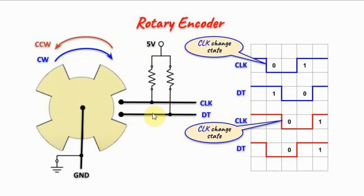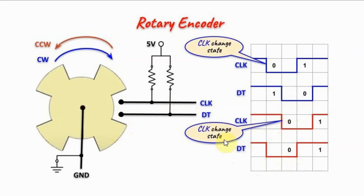When we turn the gear counter-clockwise, the cog will first make contact with the DT line, pulling it to 0. Then the cog will make contact with the clock line, pulling it to 0. Continuing the rotation counter-clockwise will give us this diagram.